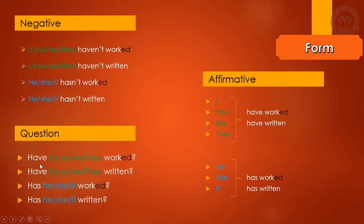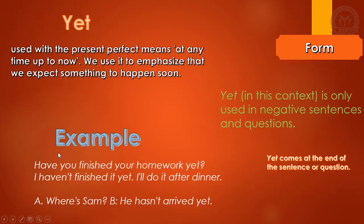In question form, we put the helping verb before the subject. Have you worked? Have they worked? Has she worked? Has she written? We can add the question word before have or has. It doesn't have to start with have or has, but the form itself, even if it's a question word, have and has comes before the subject.